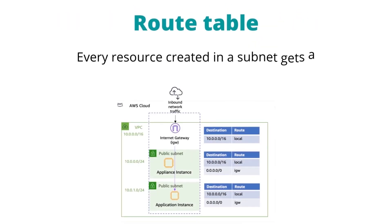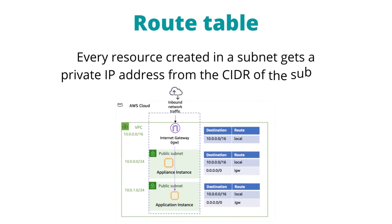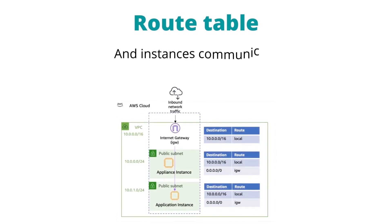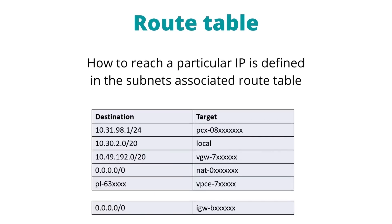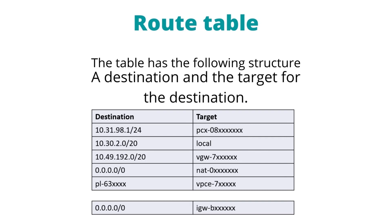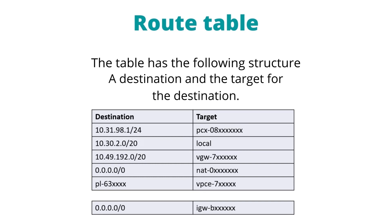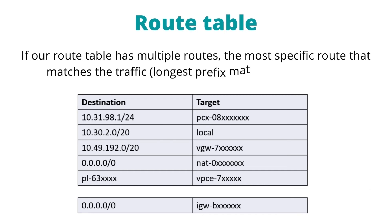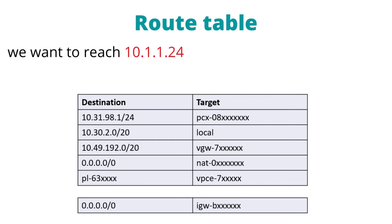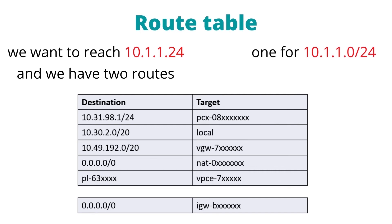Route table: every resource created in a subnet gets a private IP address from the subnet's CIDR, and instances communicate using this IP. How to reach a particular IP is defined in the subnet's associated route table, which has a destination and a target for that destination. If the route table has multiple routes, the most specific route matching the traffic — longest prefix match — will be applied. For example, to reach 10.1.1.24, if the table has routes for 10.1.1.0/24 and 10.1.0.0/16, it will use the first one.